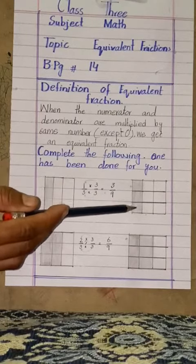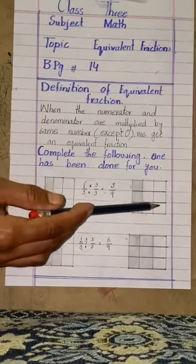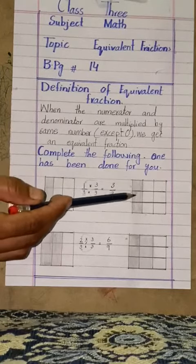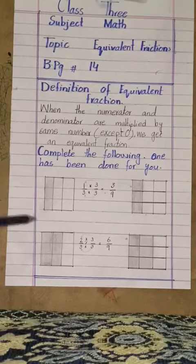These boxes: 1, 2, 3, 4, 5, 6, 7, 8, 9. And how many should be colored? 3. These 3 are colored. Second,